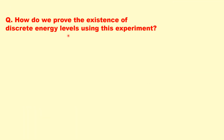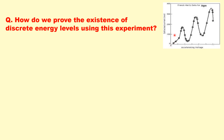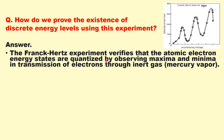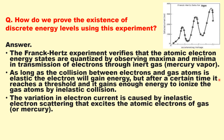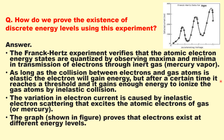How do we prove the existence of discrete energy levels using this experiment? The graph obtained in this experiment shows maxima and minima, and it verifies that atomic electron energy states are quantized. This is observed through maxima and minima in the transmission of electrons through inert gas or mercury vapor. As long as the collision between electrons and gas atoms is elastic, the electron will gain energy; after a certain peak, inelastic collisions occur and they lose energy. The variation in electron current is caused by inelastic electron scattering that excites the atomic electrons of the gas (argon or mercury), and the graph proves that electrons exist at different energy levels.